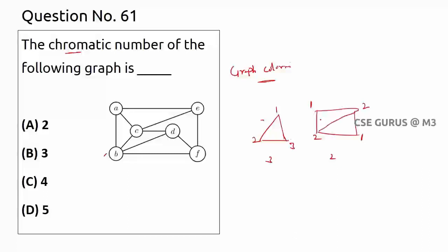For a complete graph, if I assign one here, I cannot repeat one anywhere adjacent, so I use two, three, four — one color per vertex. For any complete graph, the number of vertices equals the chromatic number. Remember this important point.